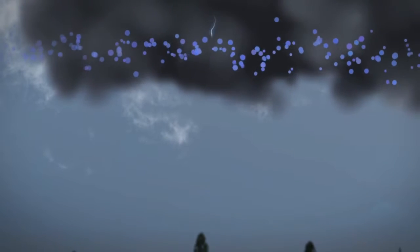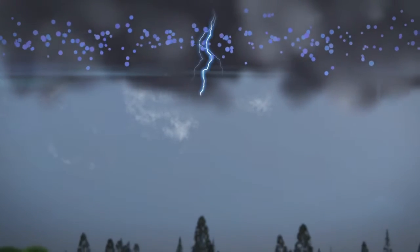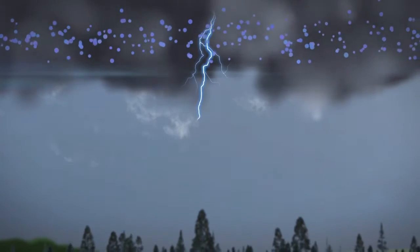A lightning strike begins with the formation of stepped leaders extending downward from the storm cloud in jumps of approximately 150 feet.